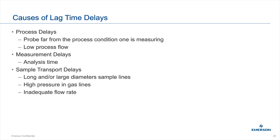There's also the measurement time delay — how long it takes the GC to complete an analysis. For C6+ applications, that's 2 to 4 minutes; for some chemical applications it's 10 to 30 minutes. Then there's the sample transportation delay: how far the probe is from the GC, whether you're flowing gas or liquid, your flow rate, and pressure — high pressure in gas lines means more volume, which takes longer to transport. You want to keep pressure low for gas lines.